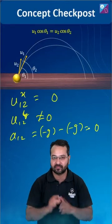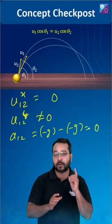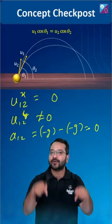Now question for you: same situation, but u1 cos θ1 not equal to u2 cos θ2. What will be the path followed by one as seen by the other? Answer in the comments below.